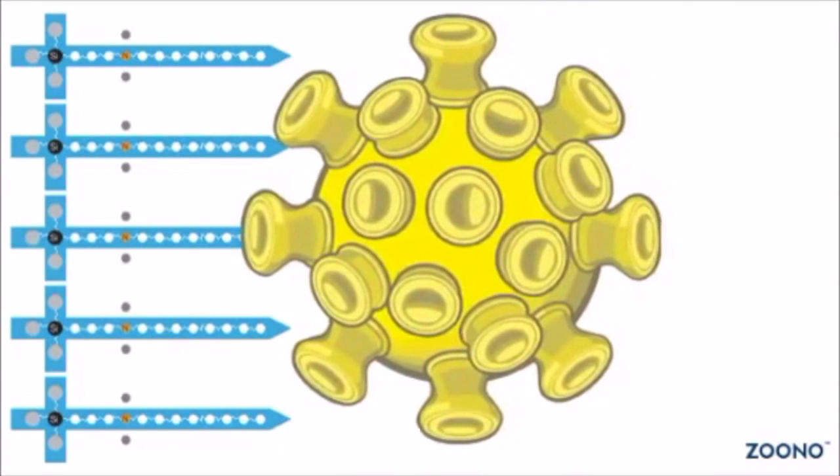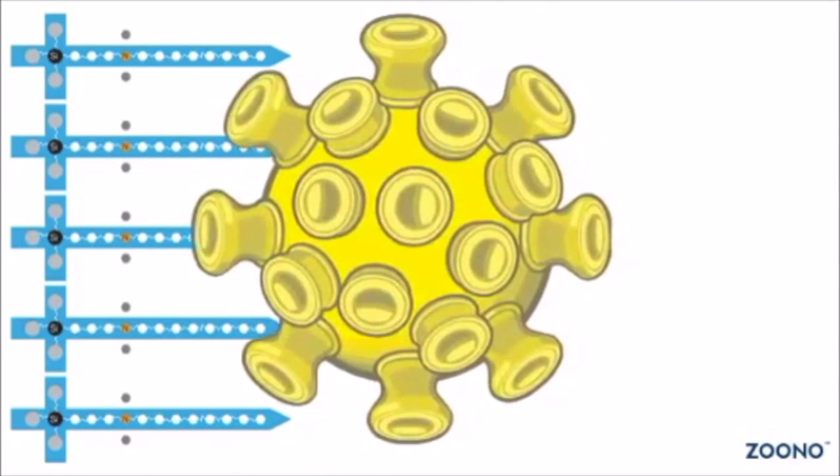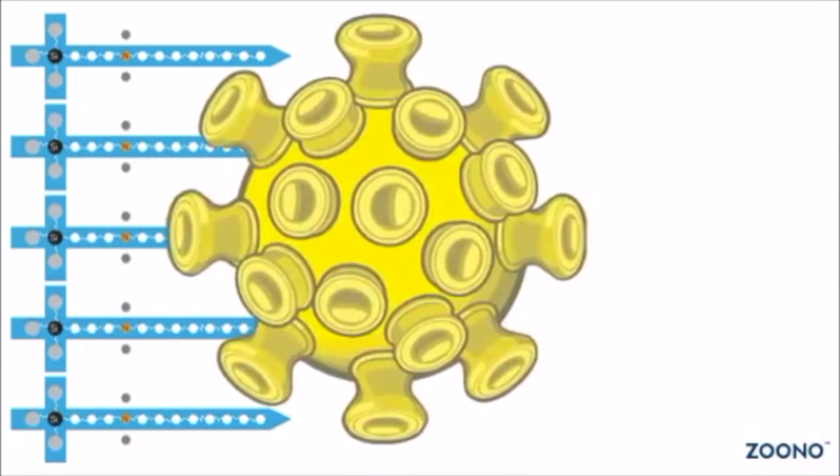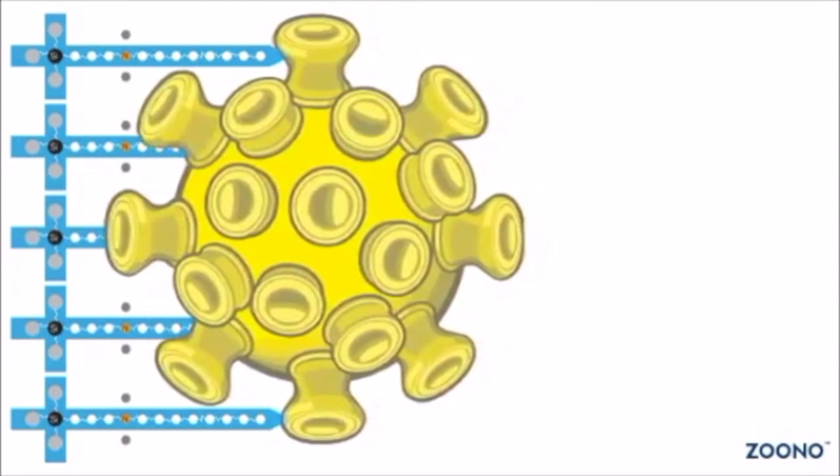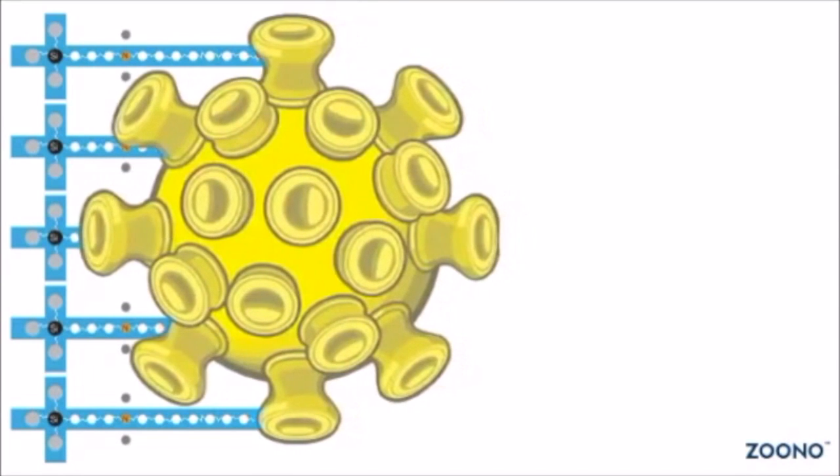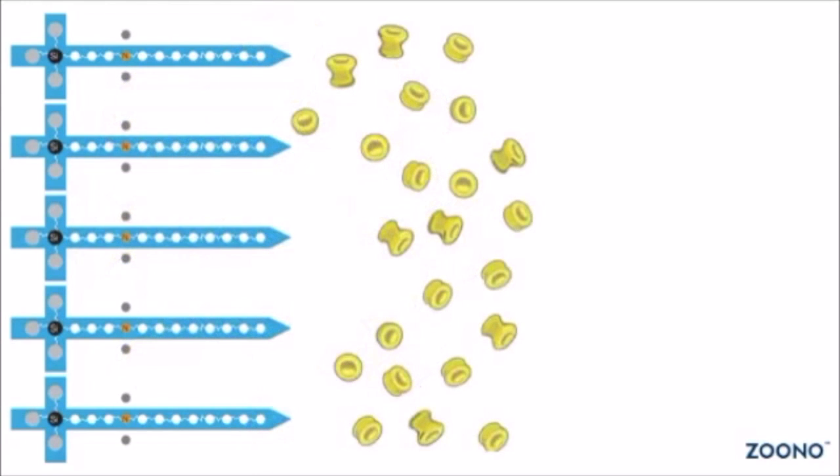The positive-negative attraction between the positive nitrogen and the negative cell membrane draws the microbe even further down on the sword. This in itself can end the life of the microbe, but upon contact between negative and positive charges, the cell membrane is electrocuted and blown apart, delivering a dependable kill.